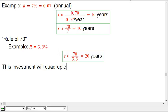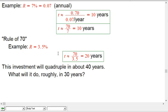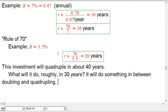What will it do roughly in 30 years? If doubling is 20 and quadrupling is 40, it will do something in between doubling and quadrupling—not exactly tripling, that would be straight-line math and that's not quite what's happening, but very roughly you could say maybe it's gonna triple. That's enough examples.